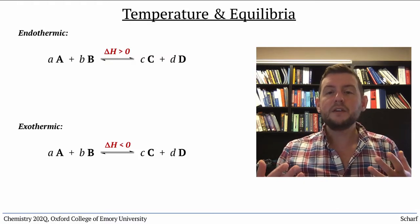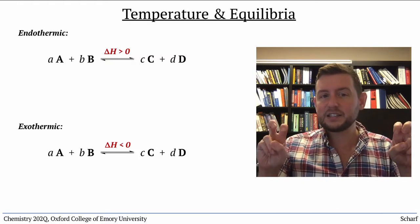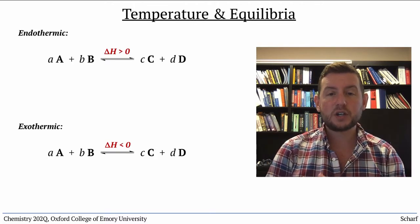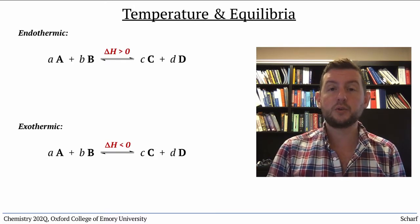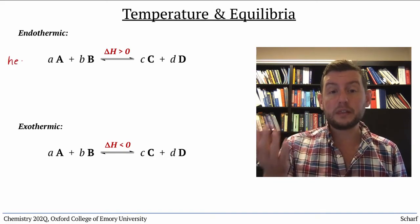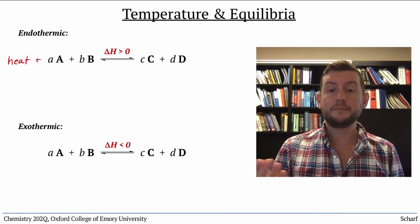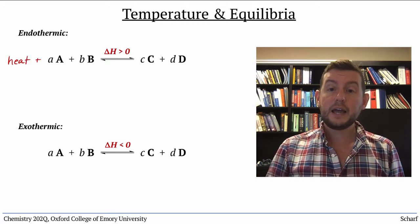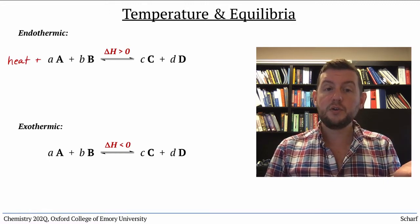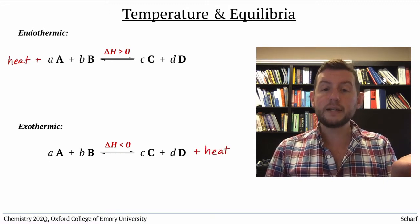We can sort of think of heat as a reactant or a product of a reaction. Endothermic reactions require heat in order to proceed, so we could imagine putting heat on the left side of the chemical equation. Similarly, exothermic reactions produce heat, so you can imagine putting heat on the right side of the equation.